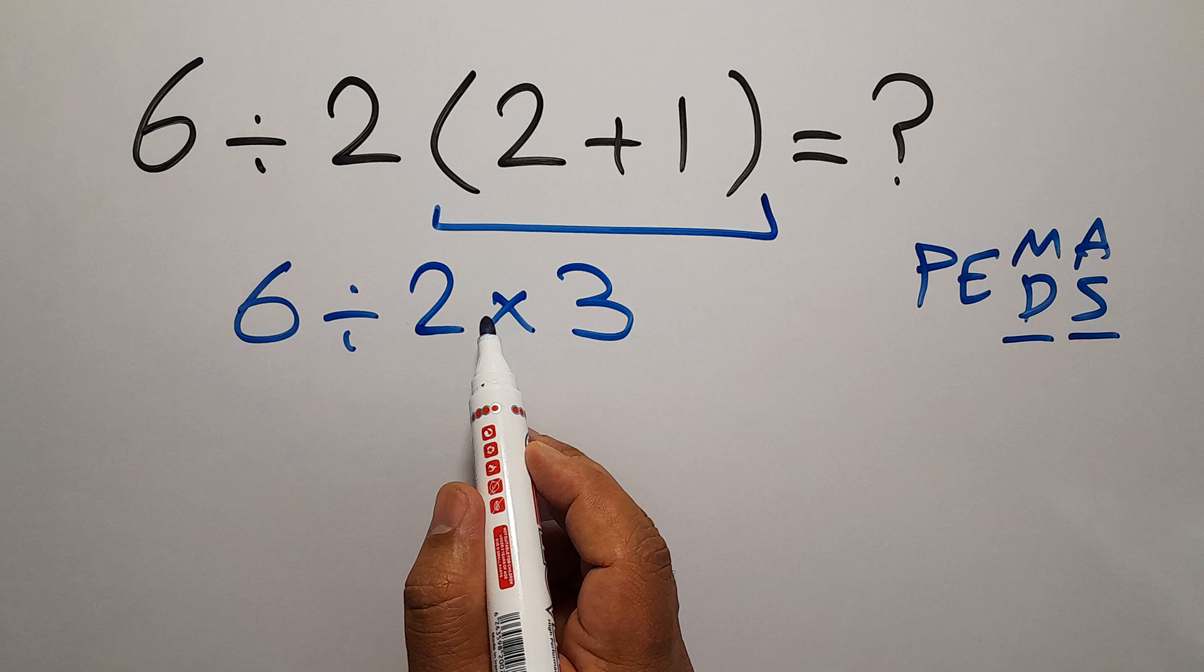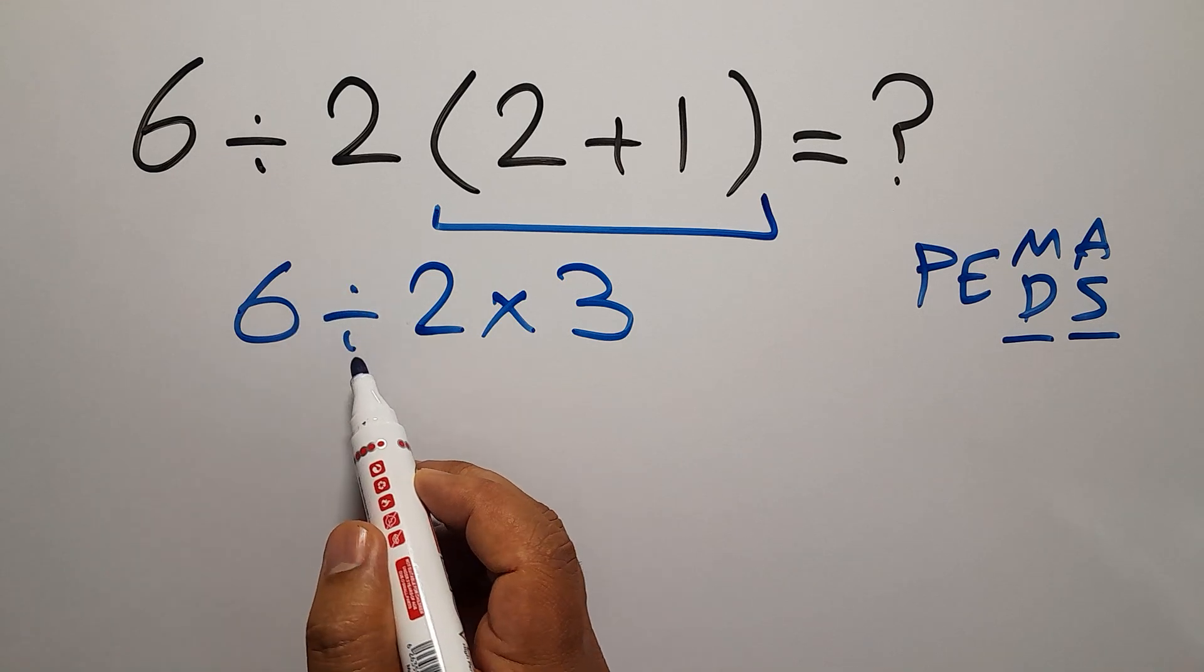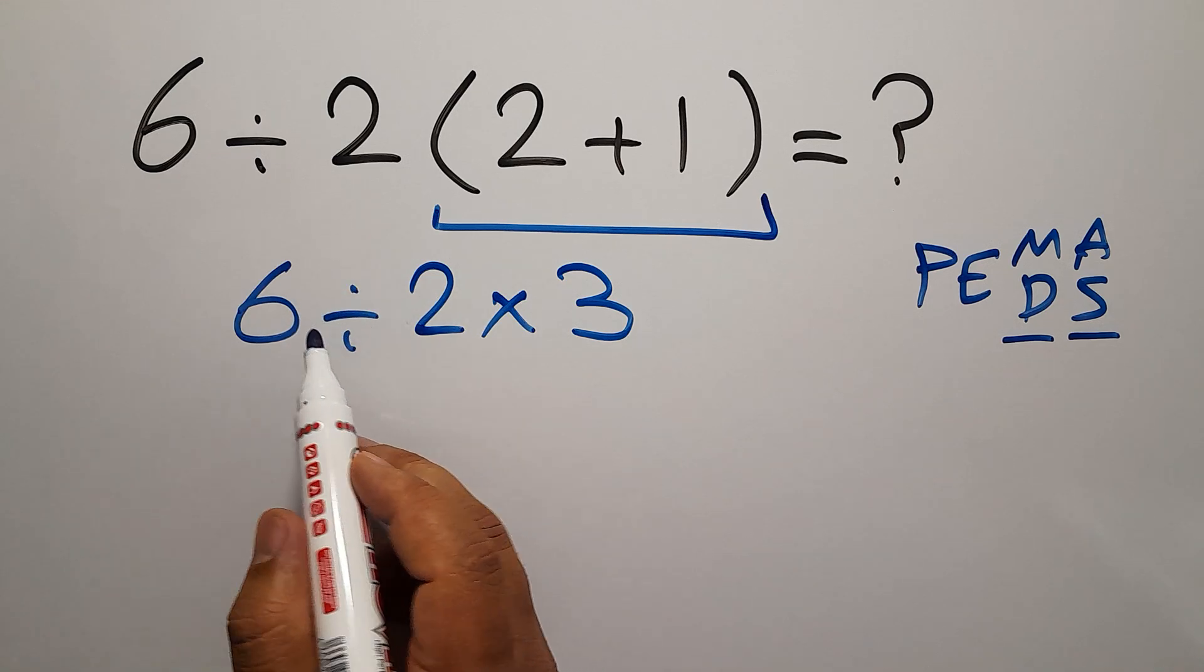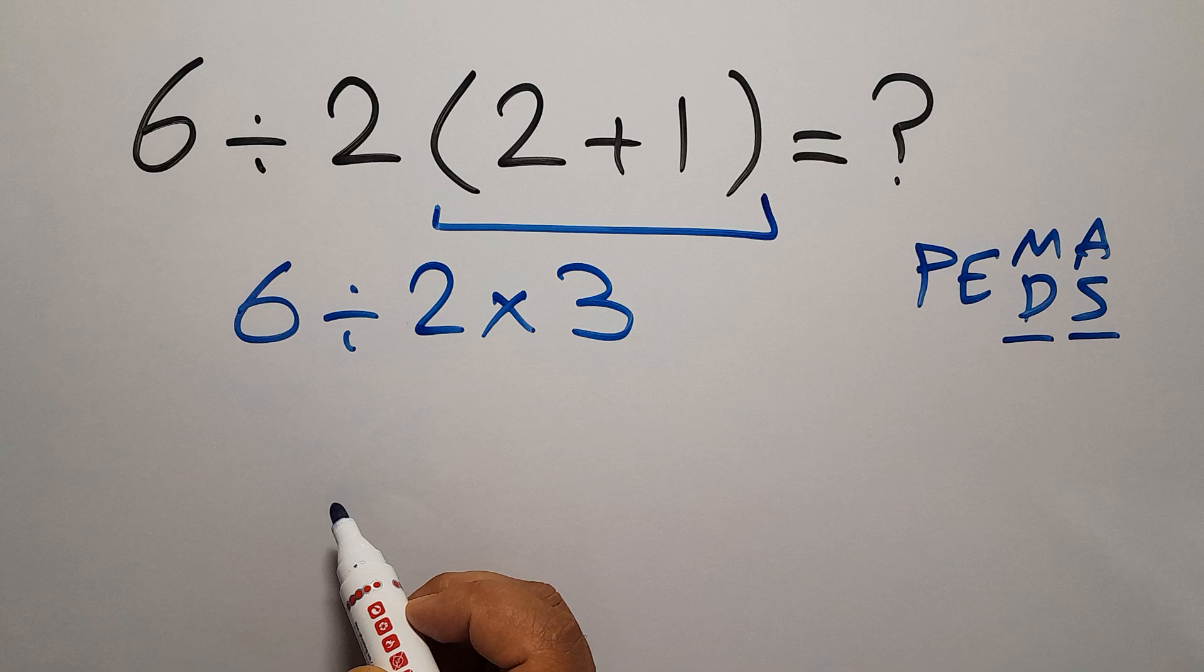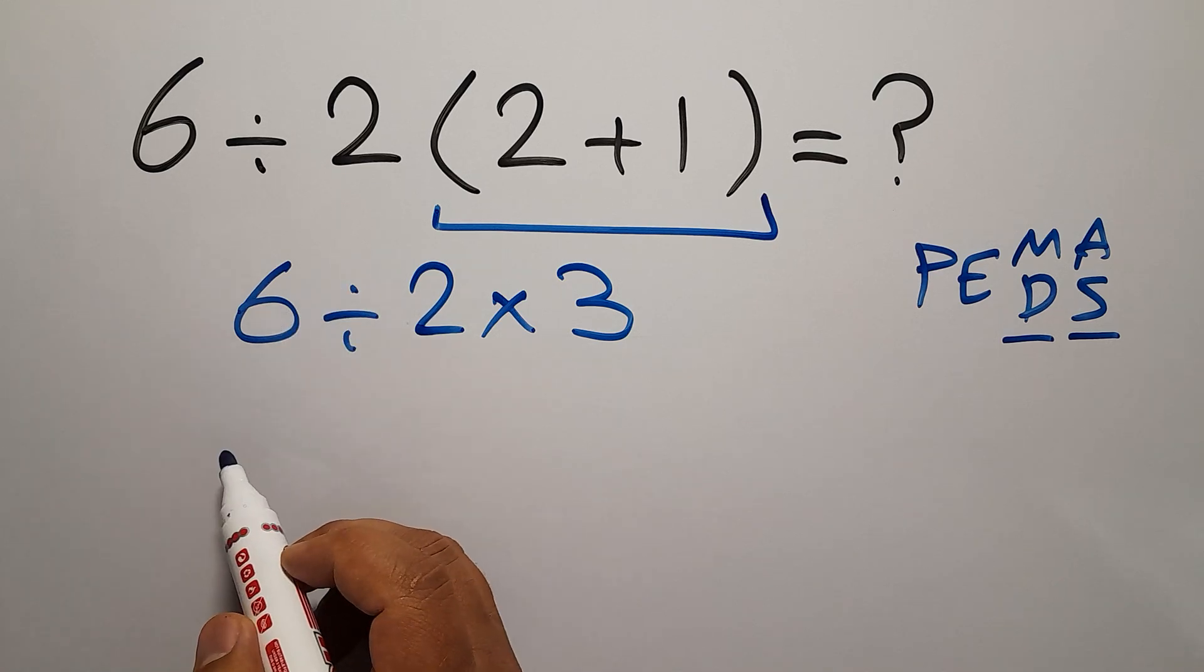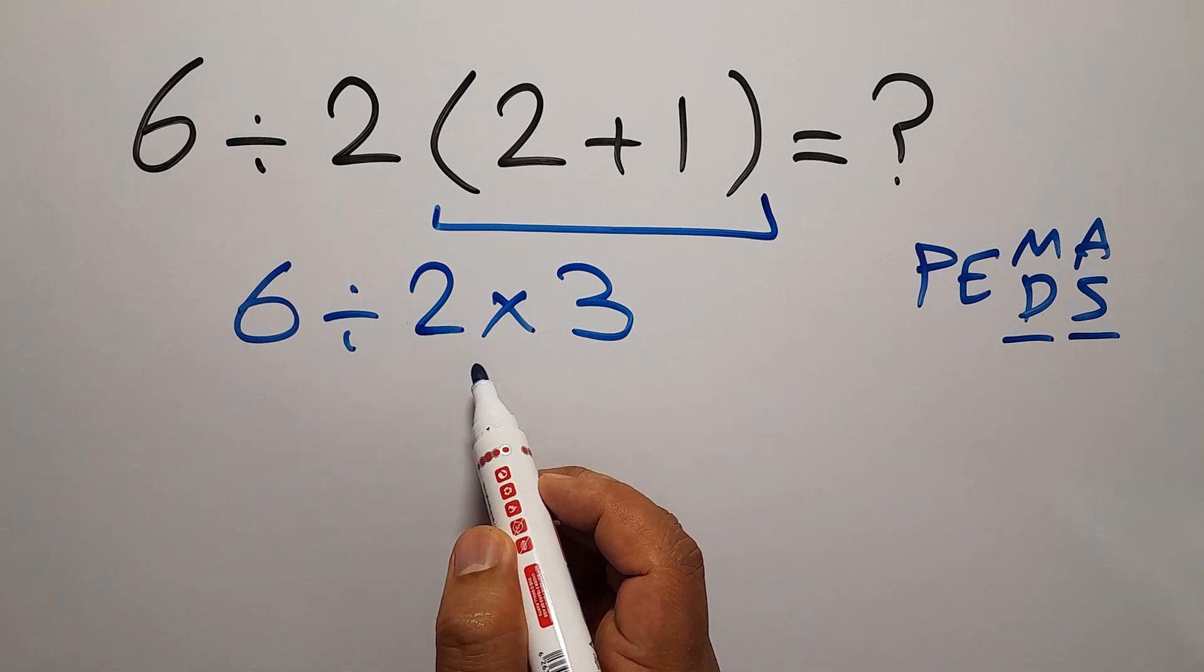As I said, multiplication and division have equal priority, and we have to work from left to right. So, first we have to do this division, not this multiplication.